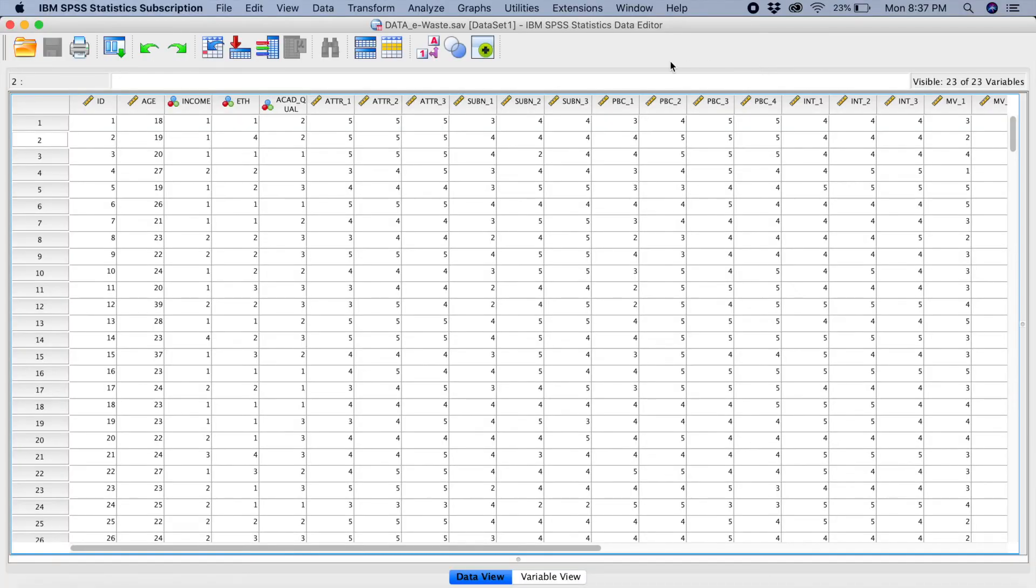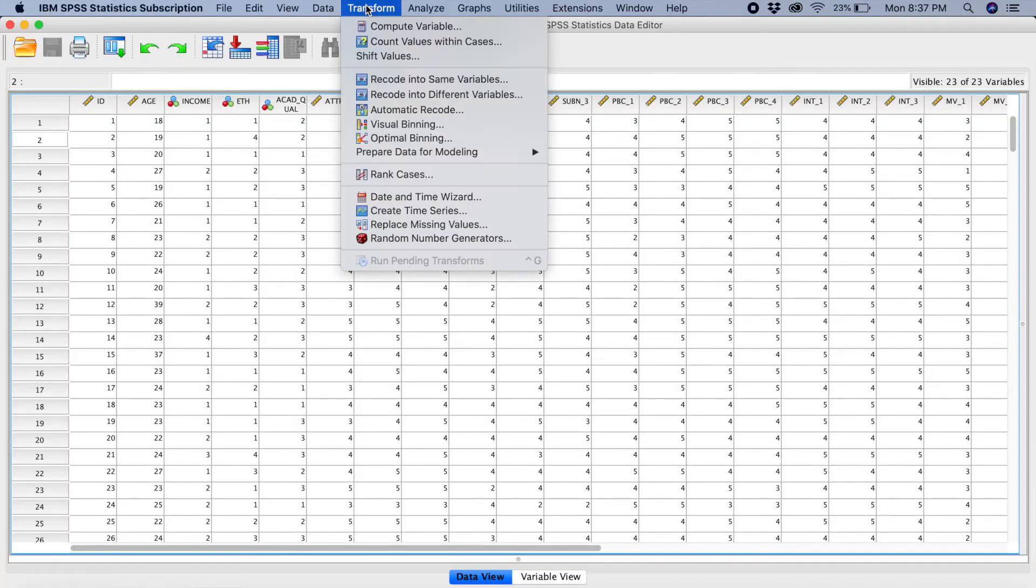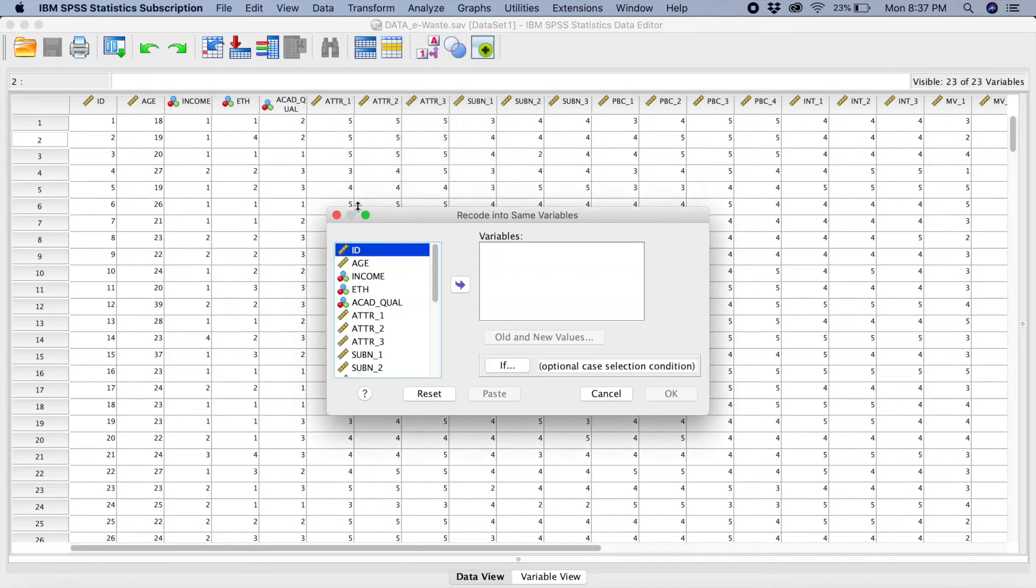So in SPSS, to do reverse coding, you have to go to transform. You select recode into same variable. So you will be having this window. So it was ATTR2 that we would want to do reverse coding. So you click on ATTR2 and get it over here. And now you click on old and new values.